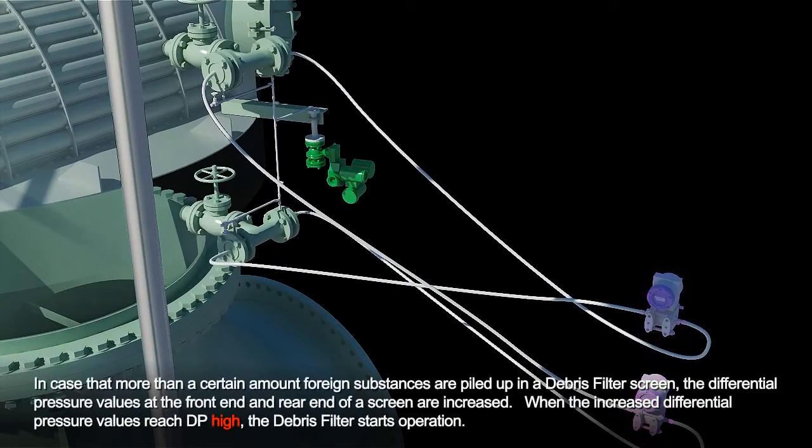In case that more than a certain amount of foreign substances are piled up in a debris filter screen, the differential pressure values at the front end and rear end of a screen are increased. When the increased differential pressure values reach DP-high, debris filter starts operation.